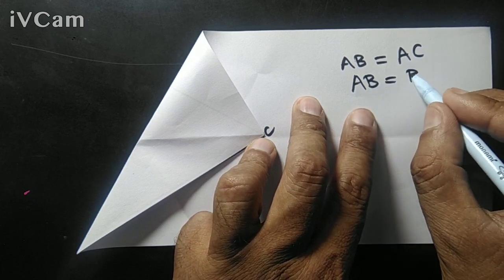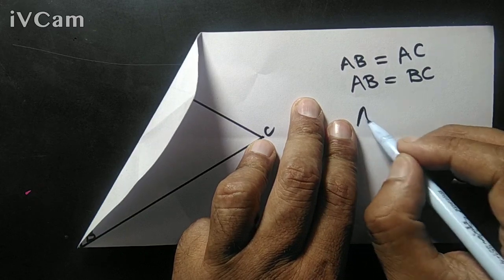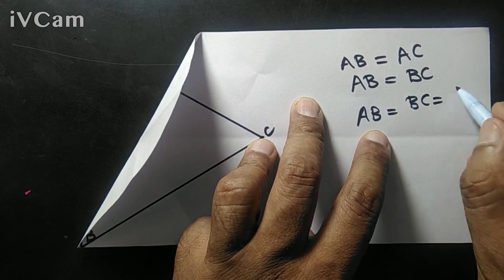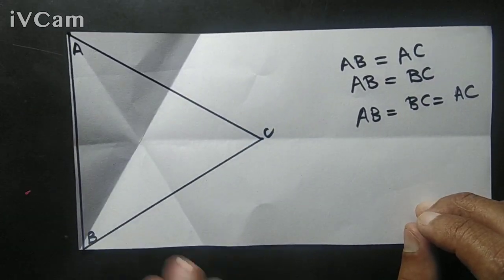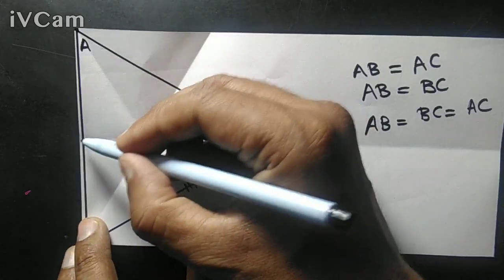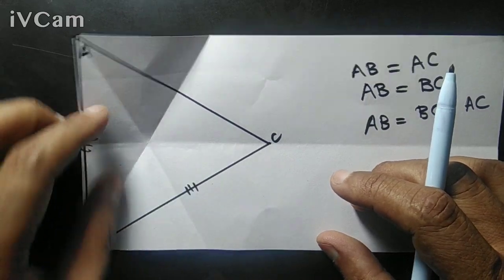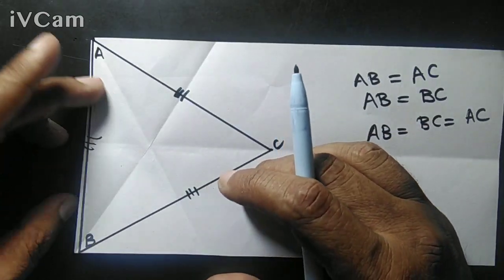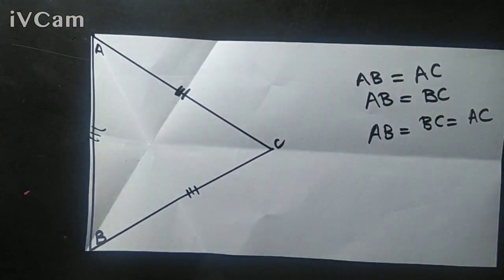So AB equal to AC and AB equal to BC. If we combine these two, we have AB equal to BC equal to AC. In other words, triangle ABC is an equilateral triangle. You observe that this side equals this side because AB superimposes with BC and this side equals that side because AB superimposes with AC. Well done.